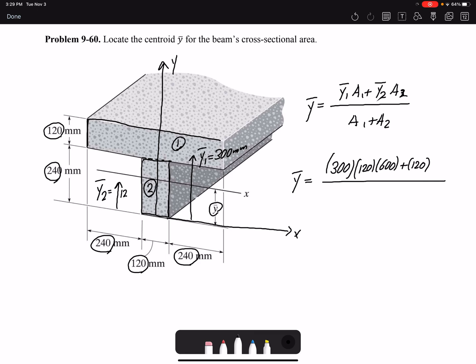And the area is 120 times 240, and the denominator would be just the area, so 120 times 600 plus 120 times 240.